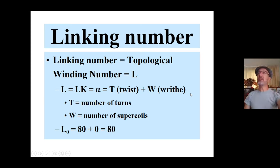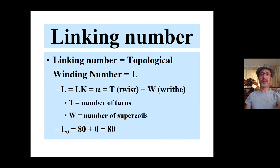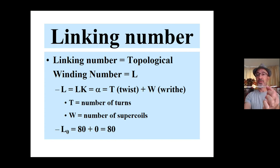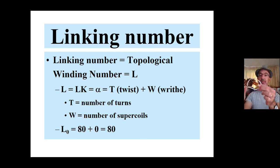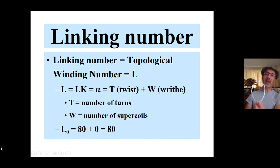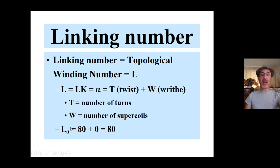Getting into parameters: the main parameter to define supercoiling is the linking number, which we also call the topological winding number, designated by L, Lk, or alpha. The linking number is the property of each circular DNA molecule — it equals the twist (the number of turns) plus writhe (the number of supercoils). In the relaxed DNA molecule — the one that was linear and then circularized — Lk equals 80. We simply have 800 base pairs divided by 10 = +80 turns, and since there is no strain and no supercoiling, writhe equals zero, so the linking number is 80.